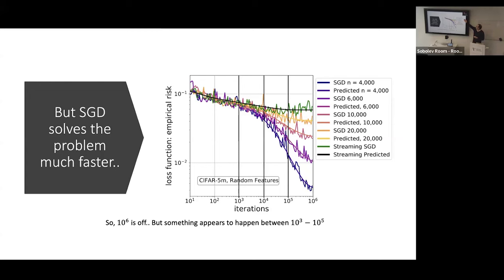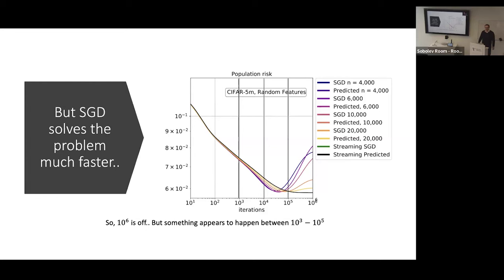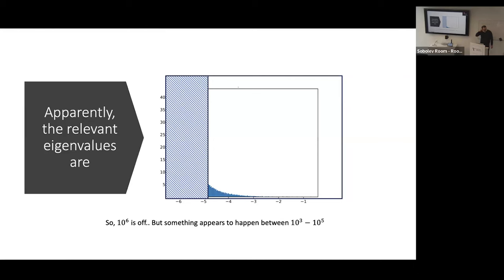This N is the number of samples. This is a streaming situation — it's actually not CIFAR-10, it's CIFAR-5M, which is some generative extension of CIFAR-10 to allow you to pretend you can do a streaming version where you have infinite data. The population risk is very similar — population risk is really a test risk in this situation. You can kind of reverse-engineer what the relevant eigenvalues are if you're very coarse about figuring out how big an eigenvalue should be for it to start to participate.